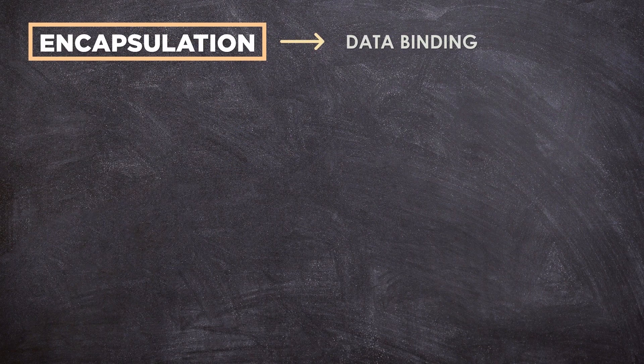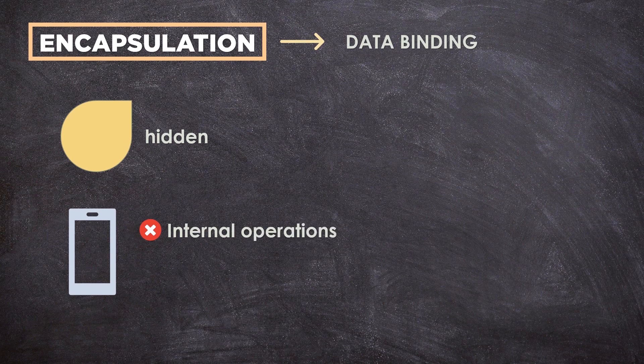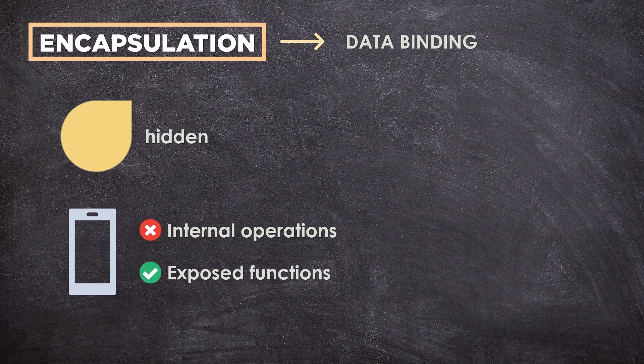Encapsulation basically hides the irrelevant information from the user. Consider the smartphone you are using now. You are not worried about the internal operations of the smartphone. You only know and care about the operations or functions it exposes to you, such as making calls, watching YouTube, or using your apps.